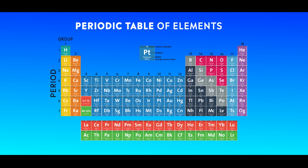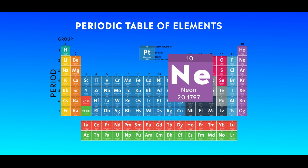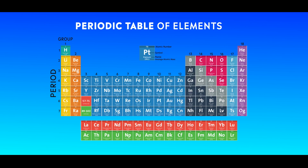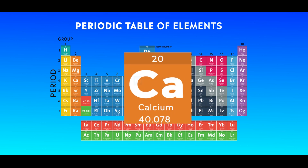Similarly, we have neon, which is given the symbol Ne, because N is already the symbol of nitrogen. And likewise, calcium is given Ca, because C is the symbol of carbon.